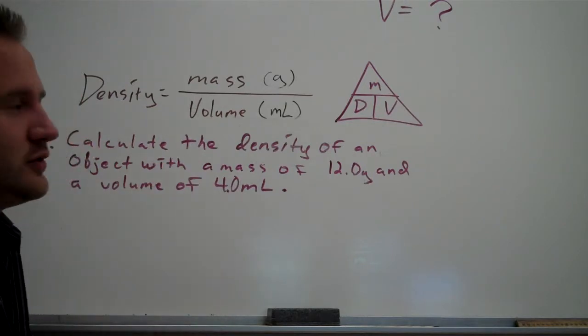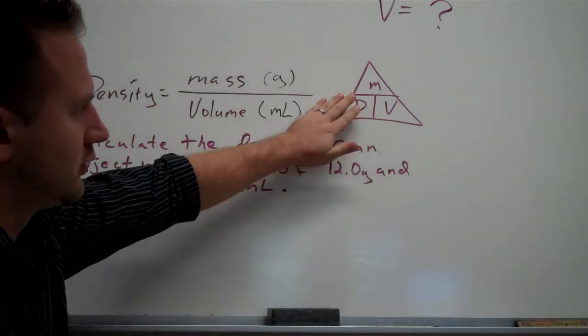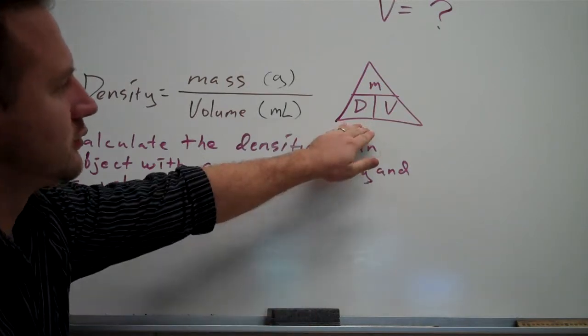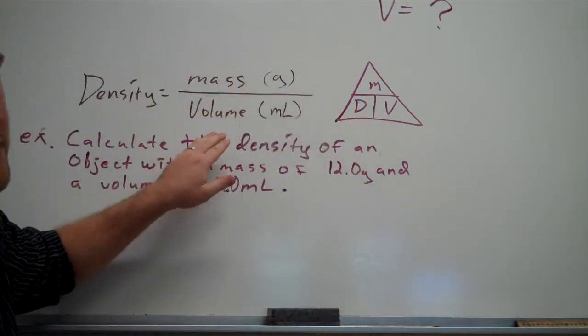Typically when people solve problems using density, they use this triangle approach. What you would do using this triangle is whatever variable in this equation you're trying to solve for, you cover that variable, and whatever remains is going to be your equation.